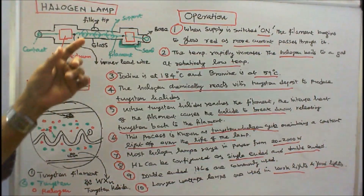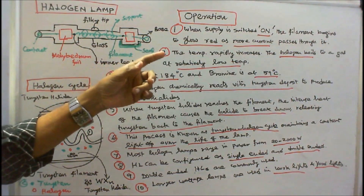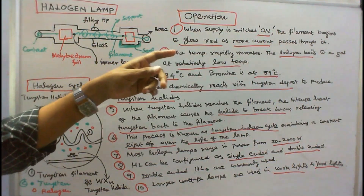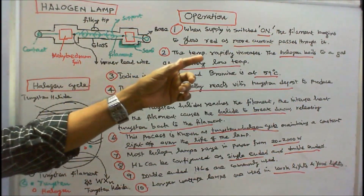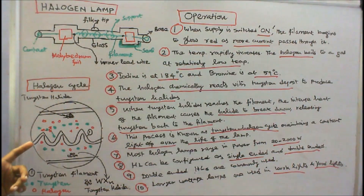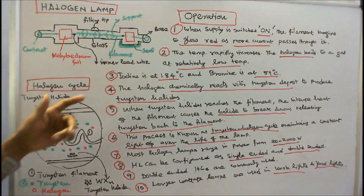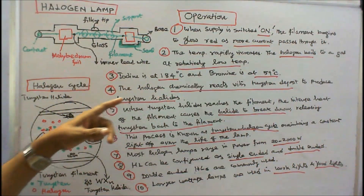Operation of the halogen lamp: when the supply is switched on, the filament begins to glow red. As more current passes through it, the temperature rapidly increases. The halogen boils to a gas at a relatively low temperature. In the diagram, green represents tungsten and red represents the halogen. The halogen chemically reacts with the tungsten deposit to produce tungsten halides.